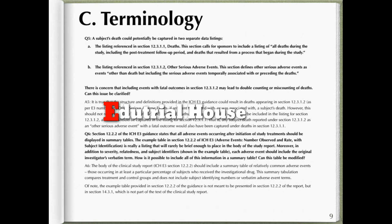Section C: Terminology. Question five: A subject's death could potentially be captured in two separate data listings. First, the listing referenced in section 12.3.1.1 (Deaths), which calls for sponsors to include a listing of all deaths during the study including the post-treatment follow-up period and deaths resulting from a process that began during the study. Second, the listing referenced in section 12.3.1.2 (Other Serious Adverse Events), which defines other serious adverse events as events other than death but including serious adverse events temporally associated with or preceding the deaths.